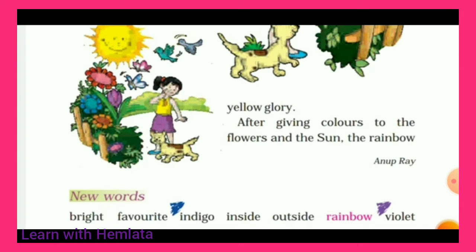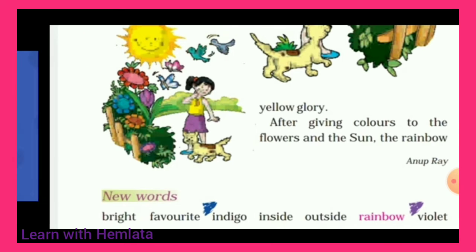Now let's focus on some new words. Bright means bahut shining color hota hai. Favorite means loving things. Indigo means blue color, as you can see in the picture. Inside means in the room or in a corner — referring to the interior. Outside means the outer area. Rainbow means jab rain hoti hai, to wahaan ek bada sa bow dikhta hai — that is called rainbow, during the rain. Violet means purple color.